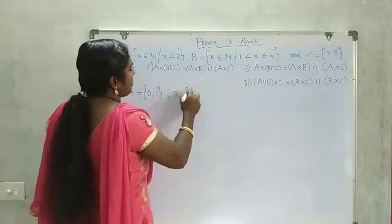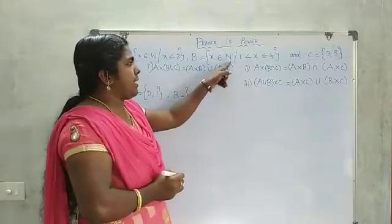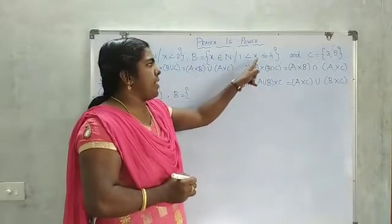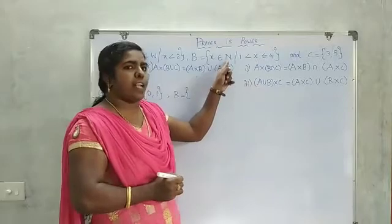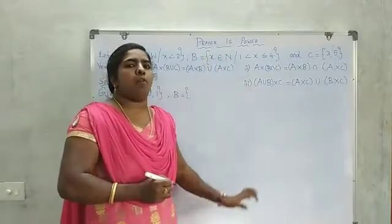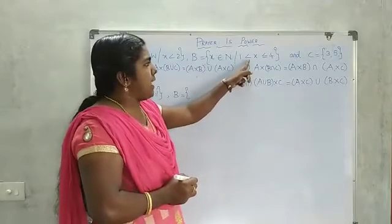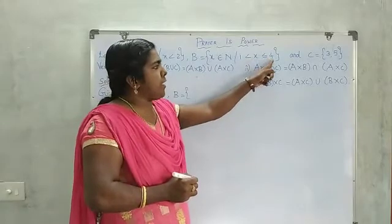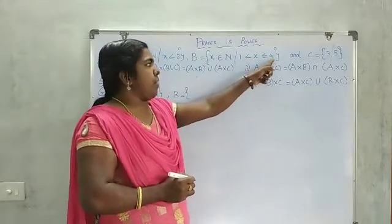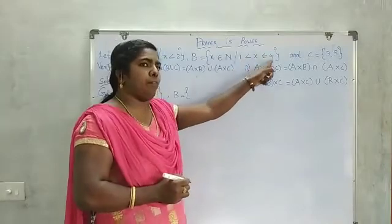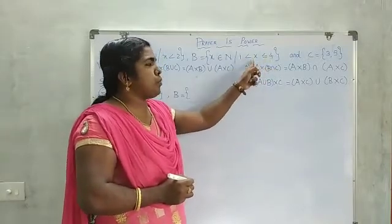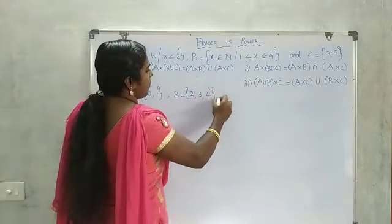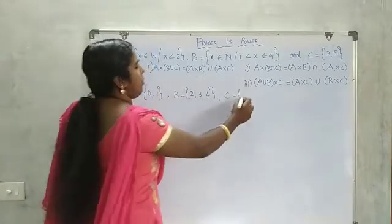B is equal to the set of all X belonging to N such that 1 less than X less than or equal to 4. N is natural number, starting from 1, 2, 3, etc. 1 less than means don't take the number 1. Less than or equal to 4 means we take the number 4. Therefore B is equal to {2, 3, 4}. C is equal to {3, 5}.